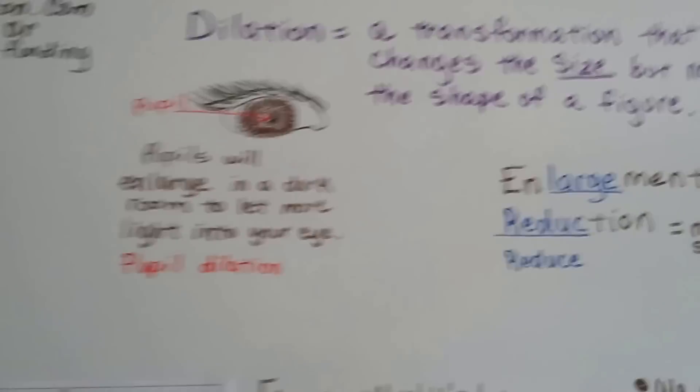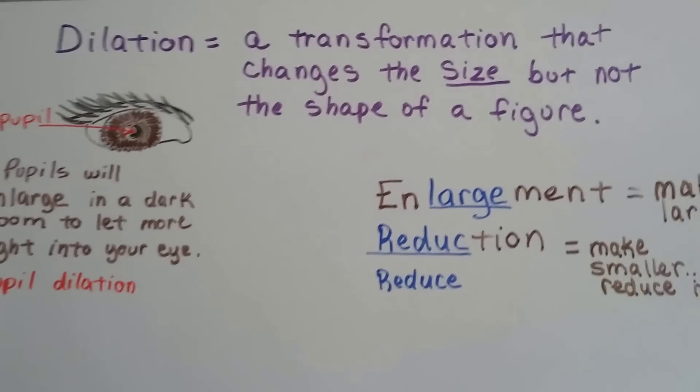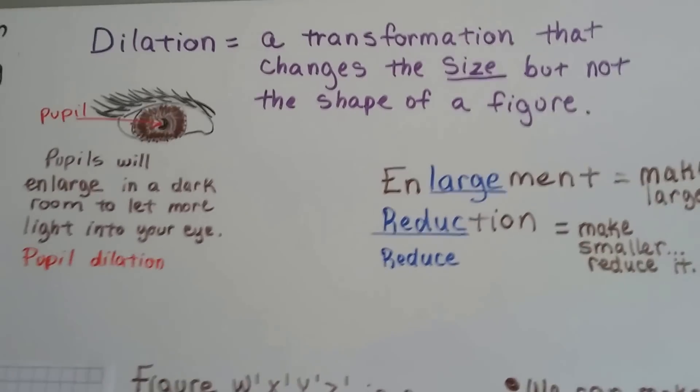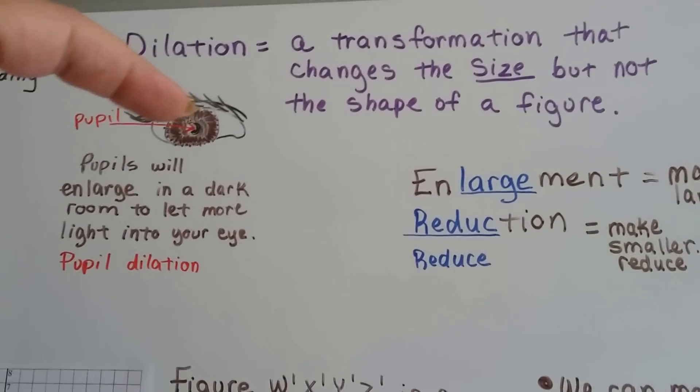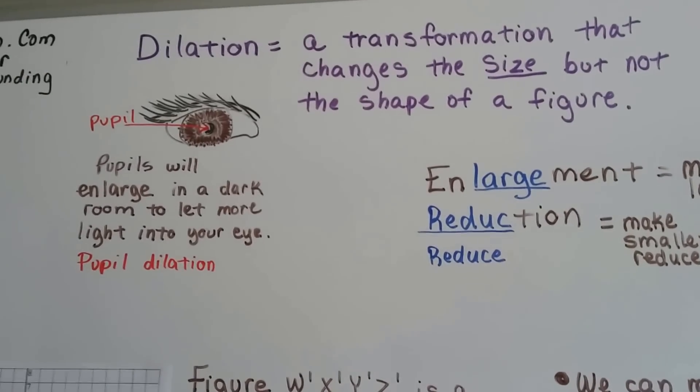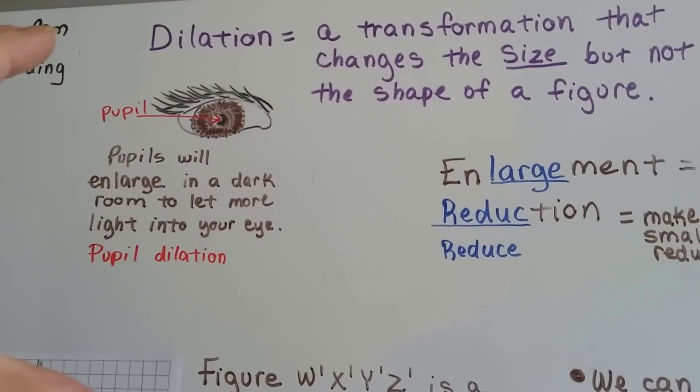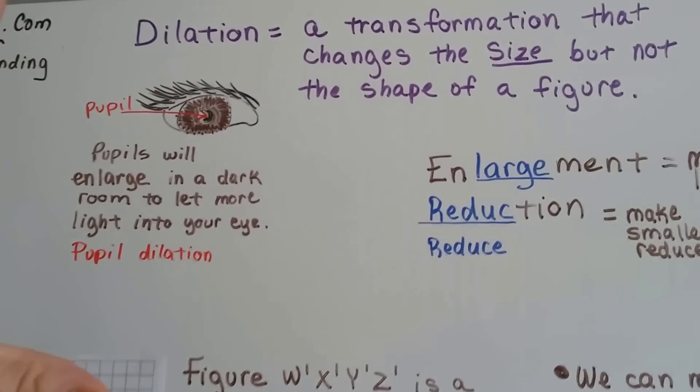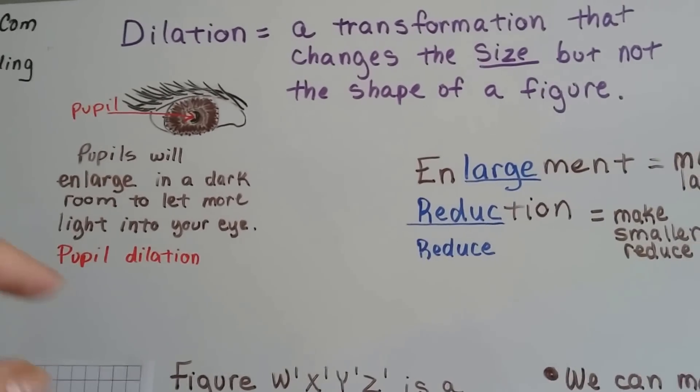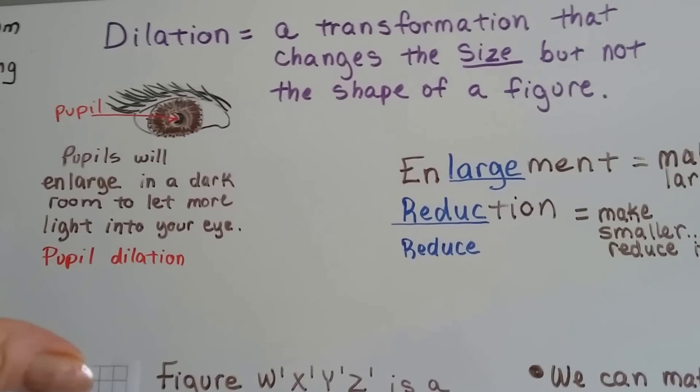So remember from the last video, a dilation is a transformation that changes the size, but not the shape of a figure. And our pupils dilate when we go into a dark room. They enlarge. This dark center of our eye gets bigger to let more light into our eyes. Our pupils dilate. You can go to the eye doctor and he'll do an eye test on you where he dilates your pupils.